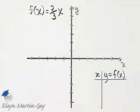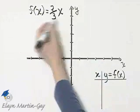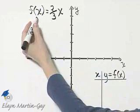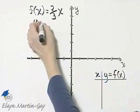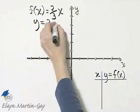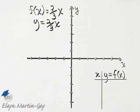Let's graph this linear function. Do not forget, if the function notation is bothering you, remember y is f of x, so you can call this y is equal to two-thirds x, and you can graph it this way. Either way is just fine.